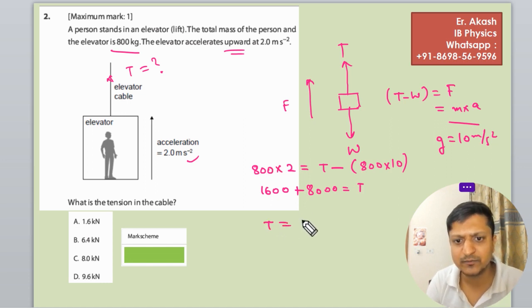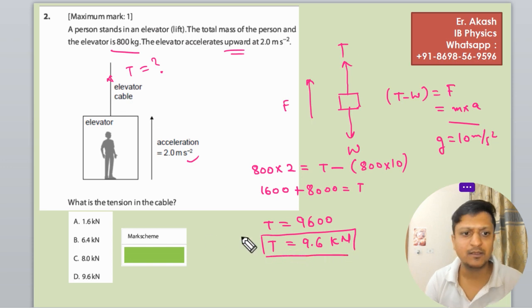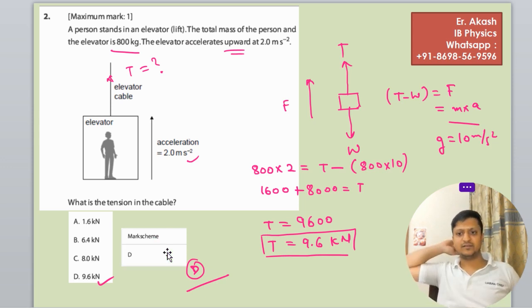So the tension equals to 9600, equals to 9.6 kilonewtons. So among this, this is the right option. T will be the right option. Now we will check the mark scheme. Yes, T is the right answer.